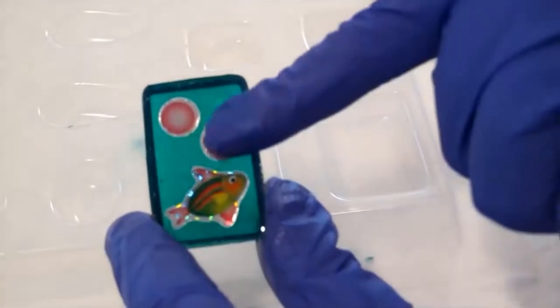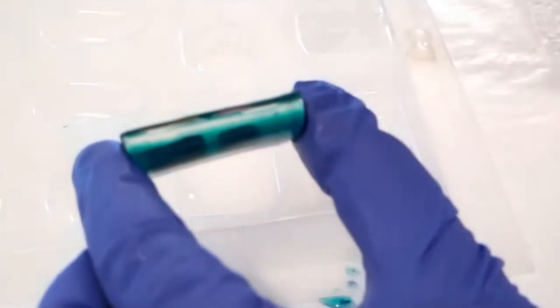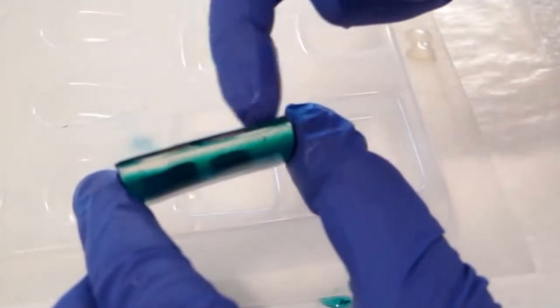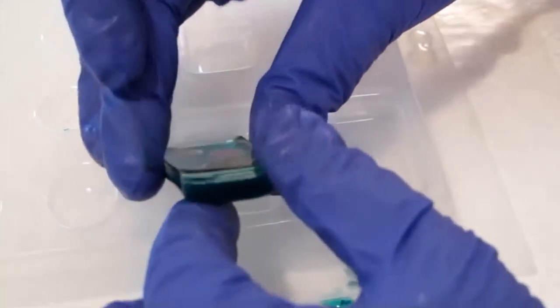So this is a pendant that I've already cast here. This is mold 403, and what I've done is I did my first layer as this green, and then the second layer I did was the clear with my inclusions.